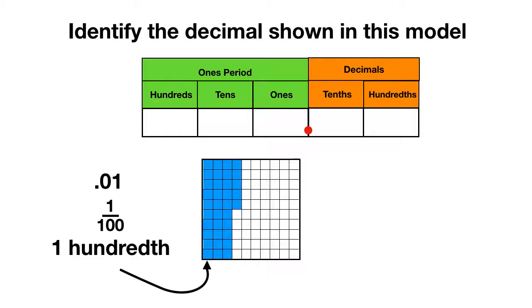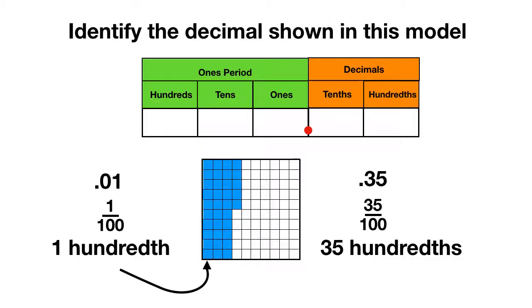So using words, we could describe this model as thirty-five hundredths. As a fraction, we would write that thirty-five pieces out of one hundred are shaded. And finally as a decimal, we can write thirty-five hundredths as .35. We'll notice that when we shade thirty-five hundredths, we're shading the same amount as if we shaded one, two, three tenths. So we can write thirty-five hundredths as three tenths and then those five extra hundredths.